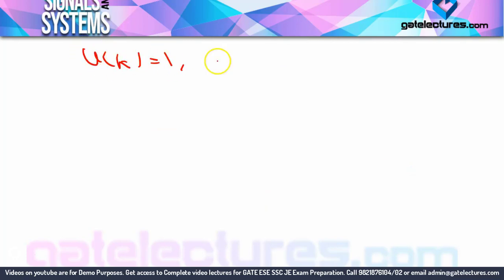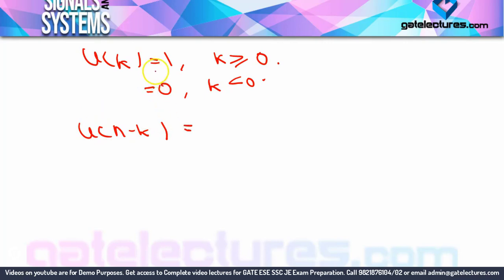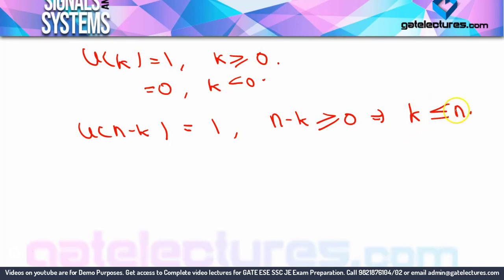The most important task is to decide the summation limits. Once you analyze uk into u(N minus k) and find the summation limits, your work is complete. Now see: uk equals 1 for k ≥ 0, and 0 for k < 0 — we have already studied this. Similarly, u(N minus k) equals 1 for N minus k ≥ 0, which you can write as k ≤ N, since we need the limit in terms of k. And u(N minus k) equals 0 for N minus k < 0, that is k > N.